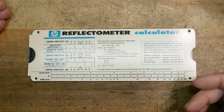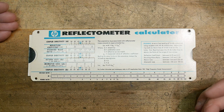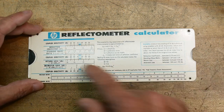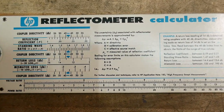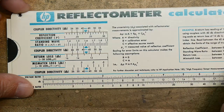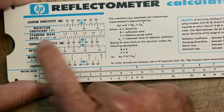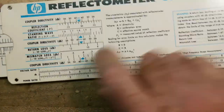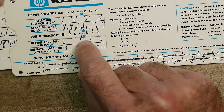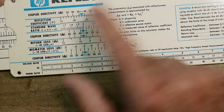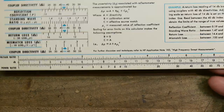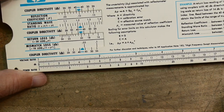I did a video once on whether you use return loss or SWR — if you grew up in ham radio you use SWR, if you grew up in RF design you use return loss. Here's the calculator. There are tables you can use, but with this one, let's say you have an SWR of 2:1 — put the arrow here at 2 — and then you can read off the return loss, which would be around 9.5 dB.